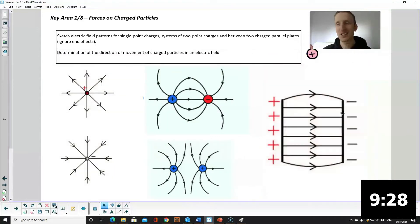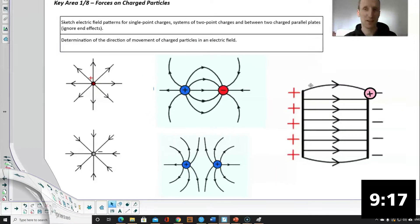Parallel plates is just lines between the two plates. You always draw your arrows away from positive towards negative. It's the direction a positive charge would travel and closer together lines mean a stronger electric field.